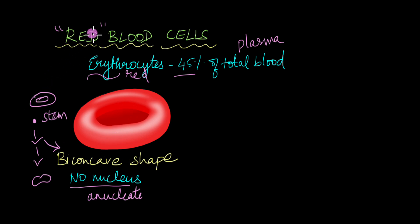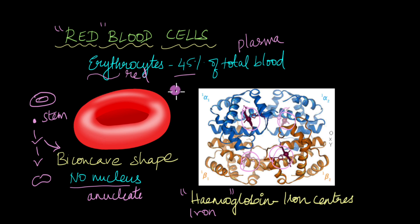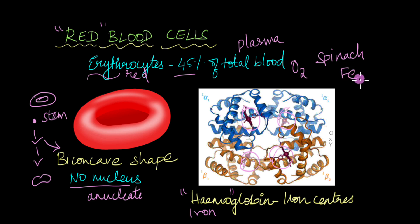Red blood cells appear red because of the presence of a specific protein known as hemoglobin. Hemoglobin — because 'heme' means iron — is an iron-containing protein. Hemoglobin has four iron centers. It's because of this that your parents and elders told you to eat a lot of spinach and green leafy vegetables due to their high iron content, which is very important to prevent diseases like anemia. Anemia is a condition in which there is an extremely low level of hemoglobin and RBCs in the blood.